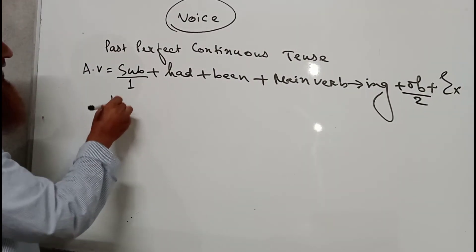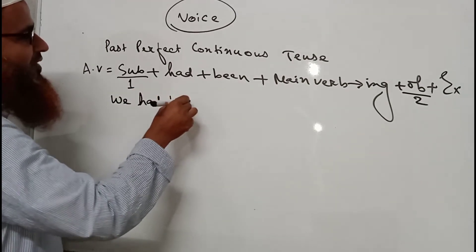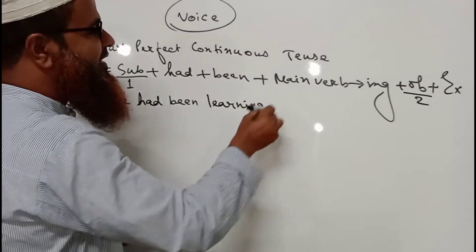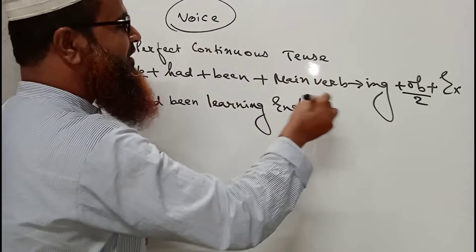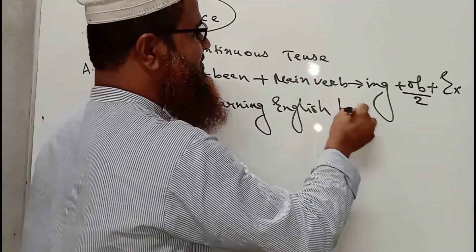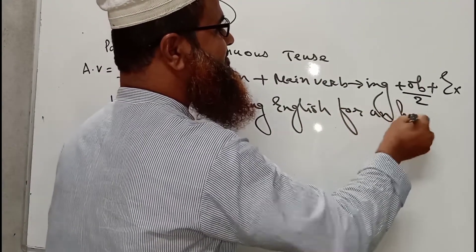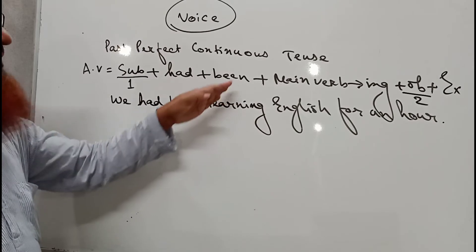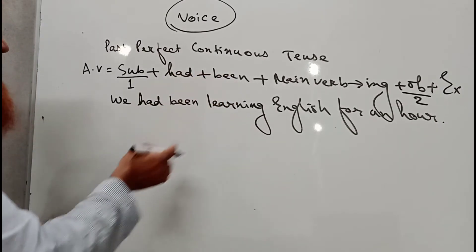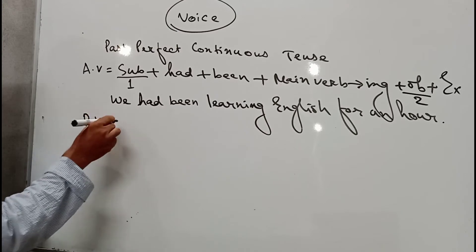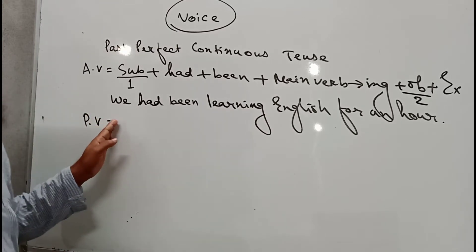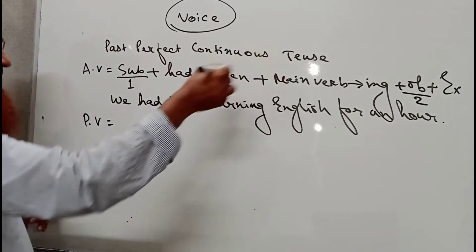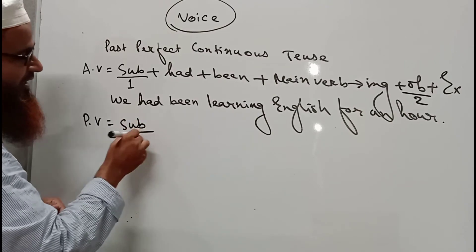I am giving number one and number two here, because the position of subject and object will be exchanged in passive voice. Here is the example: 'We have been learning English for an hour.' This is a sentence of past perfect continuous tense in active voice. Now we have to change it into passive voice, so I am writing the structure of the passive form.